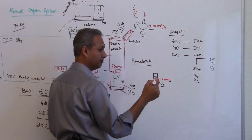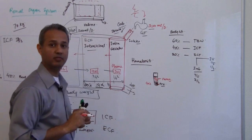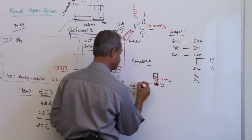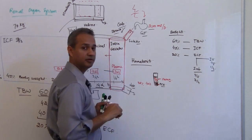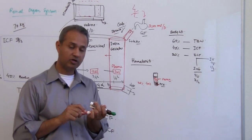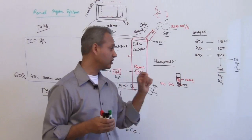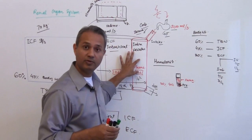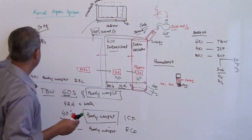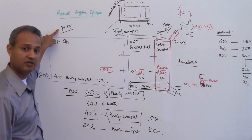The usual hematocrit ratio is that packed cell volume is 40% of whole blood volume in males, and about 35% in females. If you know the plasma volume, you can calculate the total blood volume using the body weight as a starting point — for a 70-kilogram person, total body fluid volume is 42 liters.